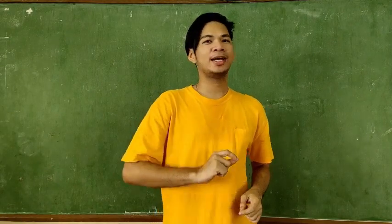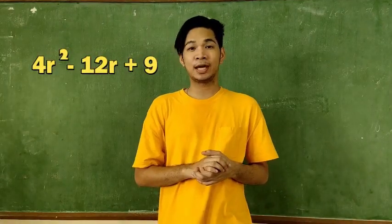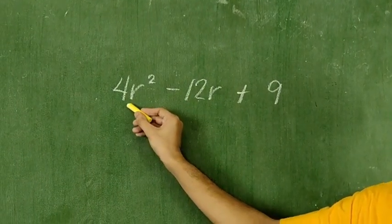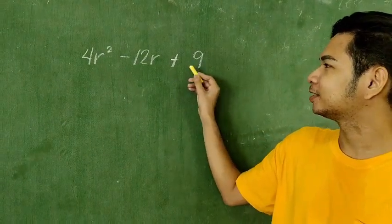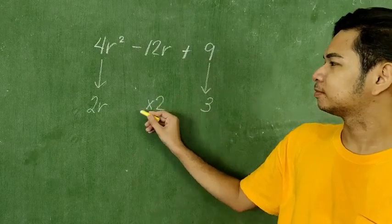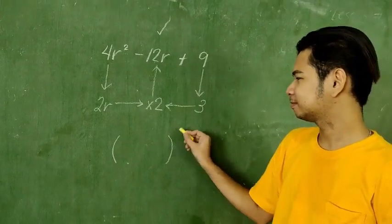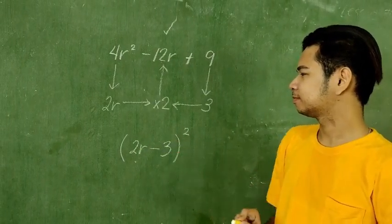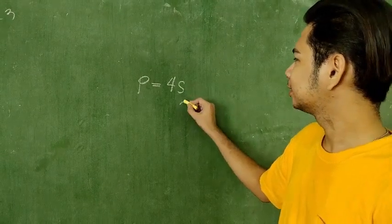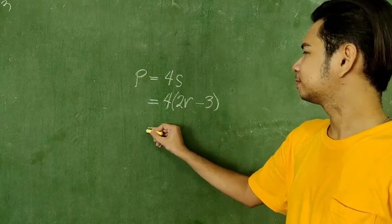It's that easy! Now, let us try another example in finding the dimensions of a square. Given the area in polynomial as 4r squared minus 12r plus 9 square centimeters, let us find the measure of its perimeter. In solving this kind of problem, we must first factor the given polynomial. Since 4r squared and 9 are both perfect squares, with 2r and 3 as their square roots respectively, and twice the product of these roots is equal to the middle term 12r, then the given expression is a perfect square trinomial. Thus, the factor is the square of 2r minus 3, following the sign of the middle term in the trinomial. In finding the perimeter, we use the formula p equals 4s, substituting 2r minus 3 to s, and multiplying it by 4 through distributive property. The perimeter is 8r minus 12 centimeters.